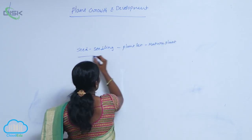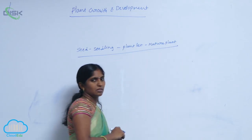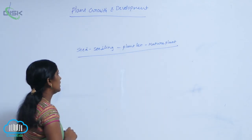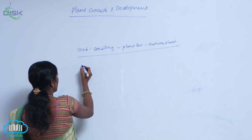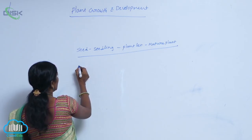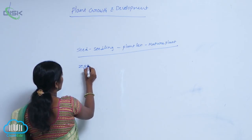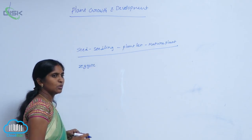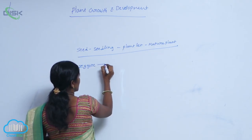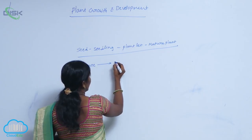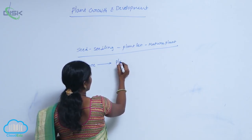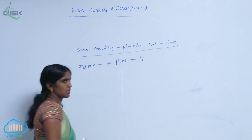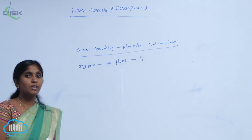How these all are fertilized? In the case of a plant, the plant will be started with a zygote. Zygote to plant — how it is produced.